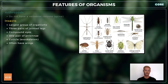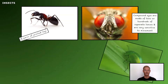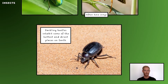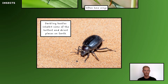Insects are a large class of arthropods that includes houseflies, ants, butterflies, wasps and beetles. They have three pairs of jointed legs, compound eyes, one pair of antennae and usually two pairs of wings. Their cuticle or exoskeleton stops water loss from inside the body, which allows insects to survive even in very hot, dry climates.